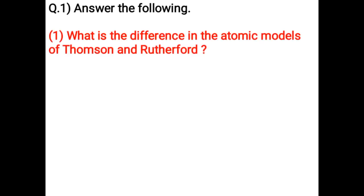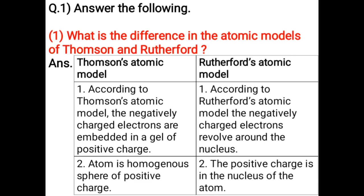What is the difference in the atomic models of Thomson and Rutherford? According to Thomson's atomic model, the negatively charged electrons are embedded in a gel of positive charge. According to Rutherford's atomic model, the negatively charged electrons revolve around the nucleus.